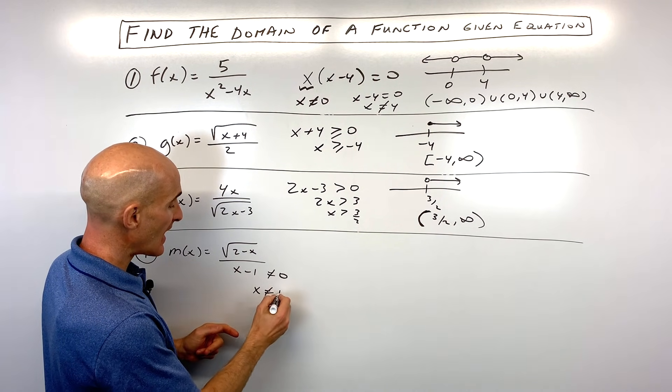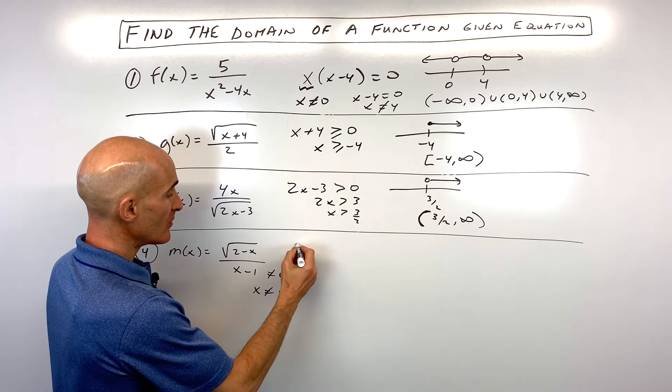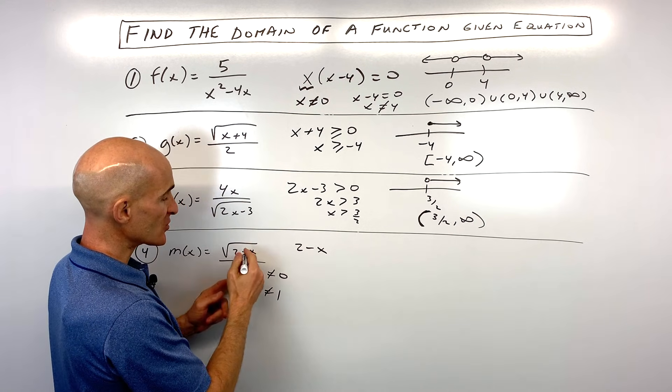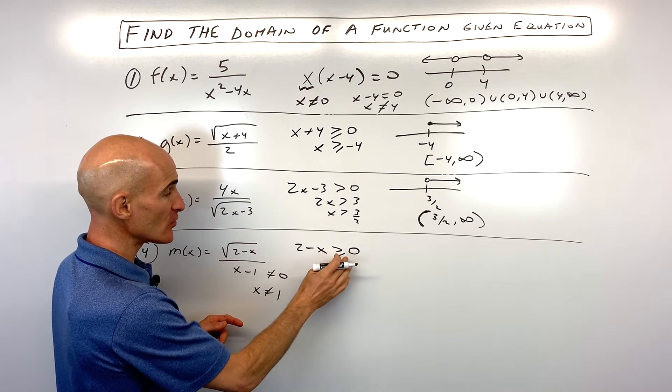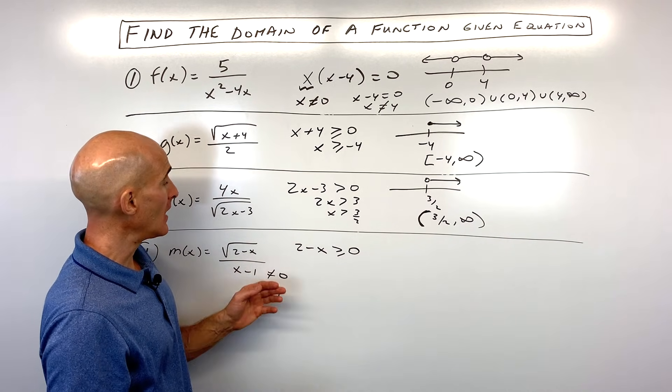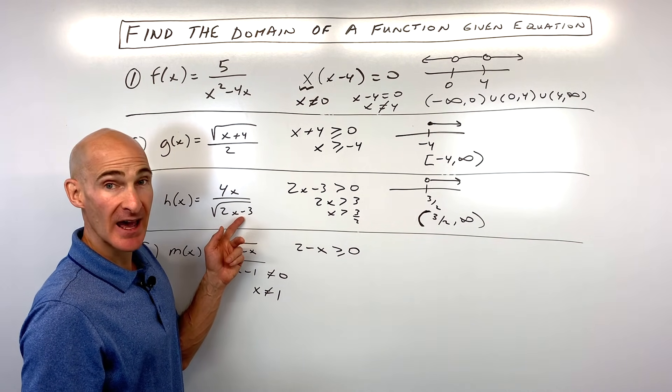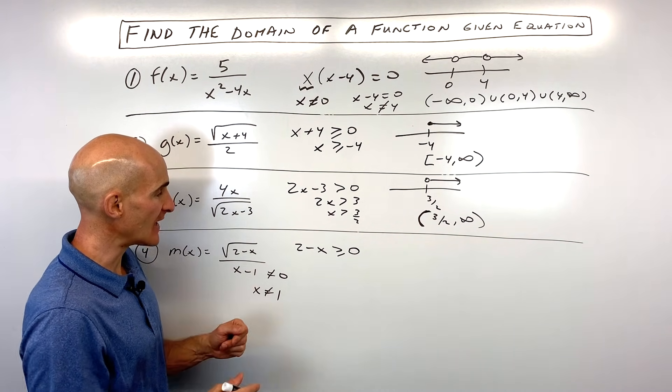So here we can see that x cannot equal one. And for the square root, two minus x has to be greater than or equal to zero. Now this one, it can equal zero because it's in the numerator. Whereas this one here, we said it had to be greater than but not equal to zero because it was in the denominator.